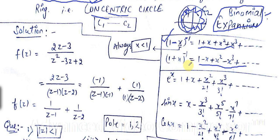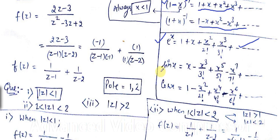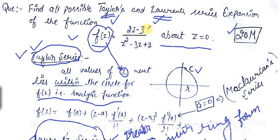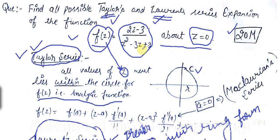The exponential expansion e^x = 1 + x + x²/2! + x³/3! + x⁴/4! + ... You should also remember the expansions for sin x and cos x. Now coming to the solution: the function is f(z) = (2z − 3) / (z² − 3z + 2), about z = 0. We need to calculate the series expansion.